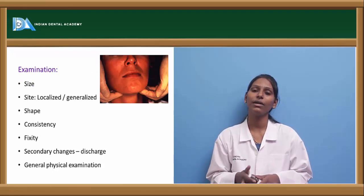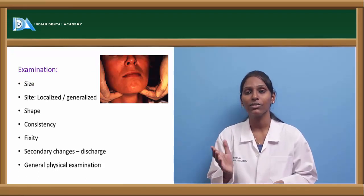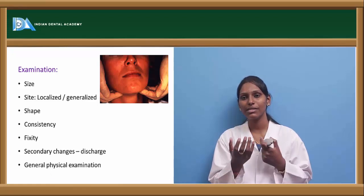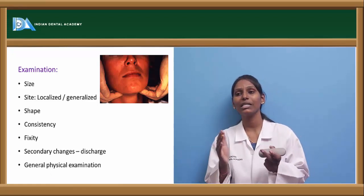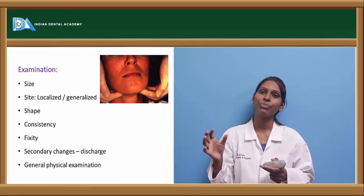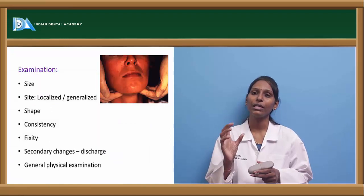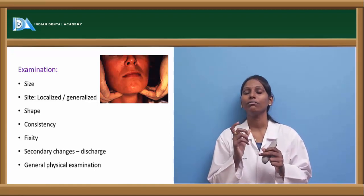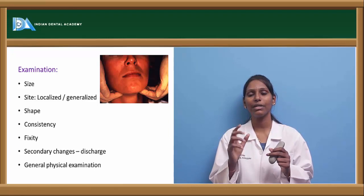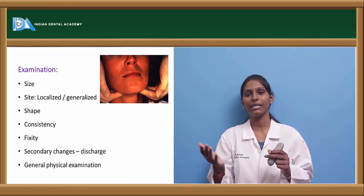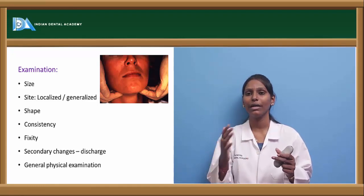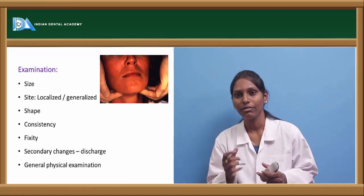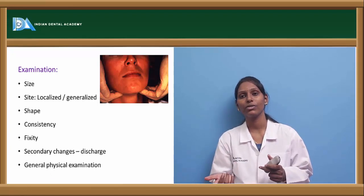On examination, the first consideration is size of the lymph node, measured in centimeters using a flexible tape. If the lymph node size is more than 3 centimeters, it helps in the staging of malignancies. In severe advanced malignancies, the size of the lymph node is usually more than 1 centimeter. Site of the lymphadenopathy also matters — whether it is generalized or localized to a particular region such as cervical, axillary, or inguinal.